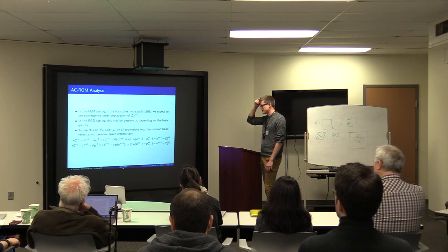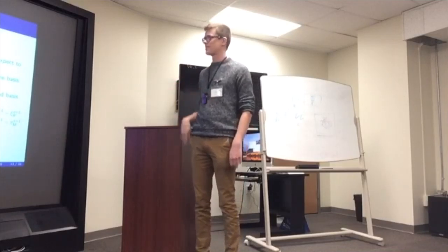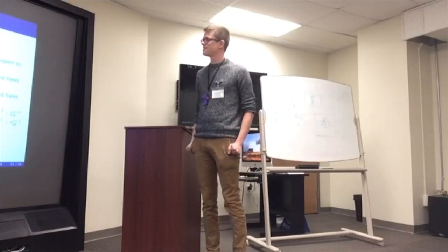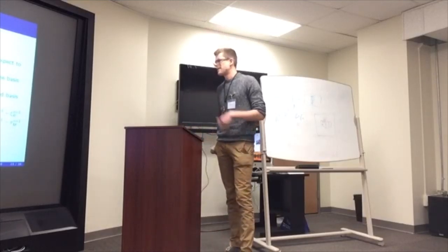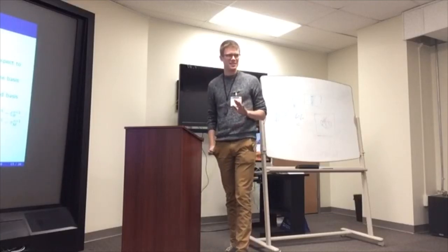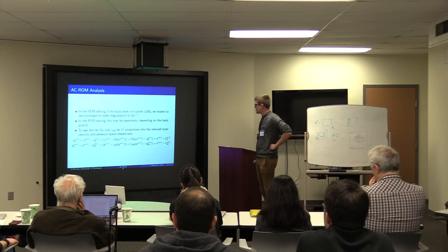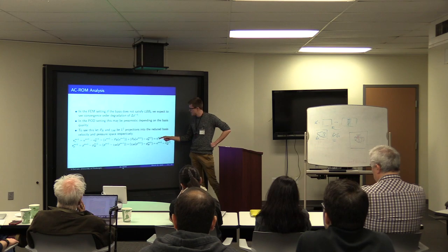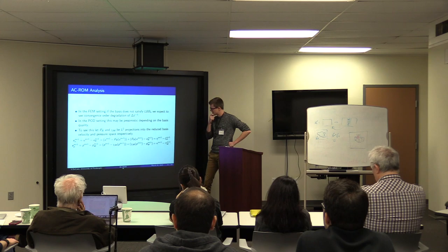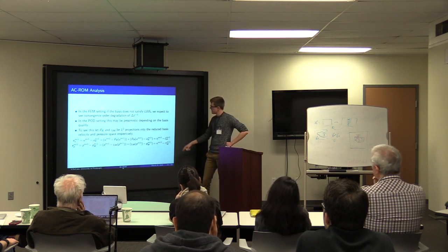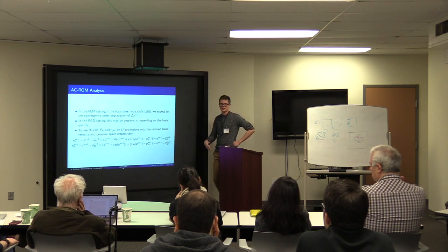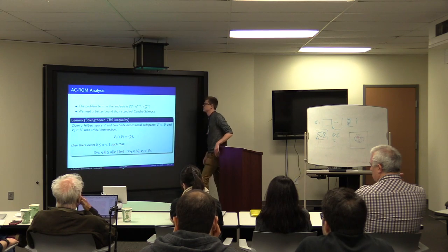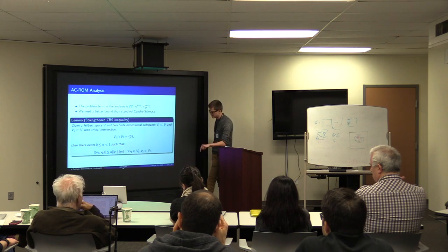So what happens if you don't satisfy inf-sup stability and you don't try to correct it with some stabilization? When you do the error analysis, you pick up a bad term that's delta t to the negative one. So you expect to see eventually order reduction in your method. So this is pessimistic though because it's multiplied by constants, and we're going to later quantify what these constants are.